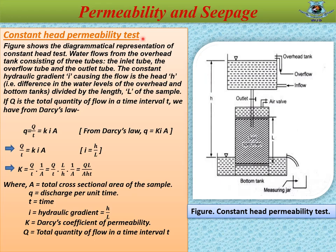The figure shows the diagrammatical representation of the constant head test. Water flows from the overhead tank through three tubes: the inlet tube, the overflow tube, and the outlet tube. The constant hydraulic gradient i causing the flow is the head H divided by the length L of the sample. If Q is the total quantity of flow in a time interval T, we have from Darcy's law: q = Q/T = kiA.